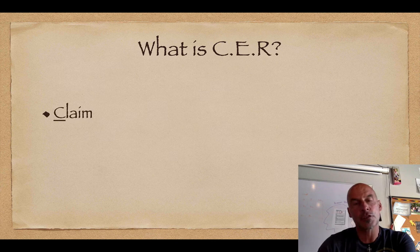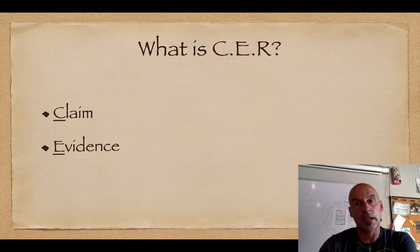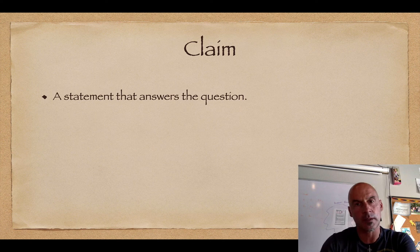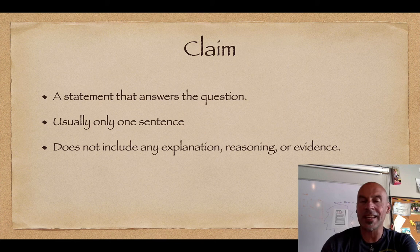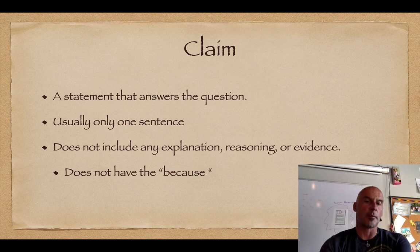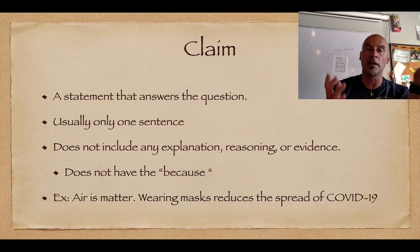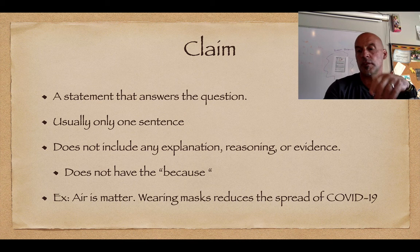So how does CER fit into all this? There are three parts to CER: C is the claim, E is evidence, and R is reasoning. The claim is a statement that answers the question. It's usually only one sentence and does not include any explanation, reasoning, or evidence — so it does not have a 'because' in the statement. For example, your claim may be that air is matter, or that wearing masks reduces the spread of COVID-19. That is what you are using the evidence and the reasoning to prove.